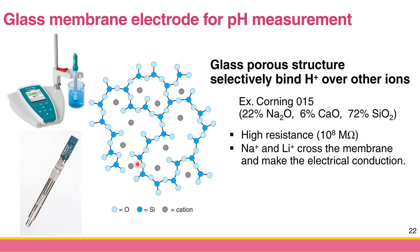The silicon structure has many pores — we call this the glass porous structure. This part selectively binds protons over other ions. Each gray circle here represents a proton or hydrogen ion. Because of the appropriate size and charge, the glass membrane selectively binds with protons. If the pore size were too large, it could bind other ions instead, but with Corning 015 the pore size is appropriate for selective proton binding.